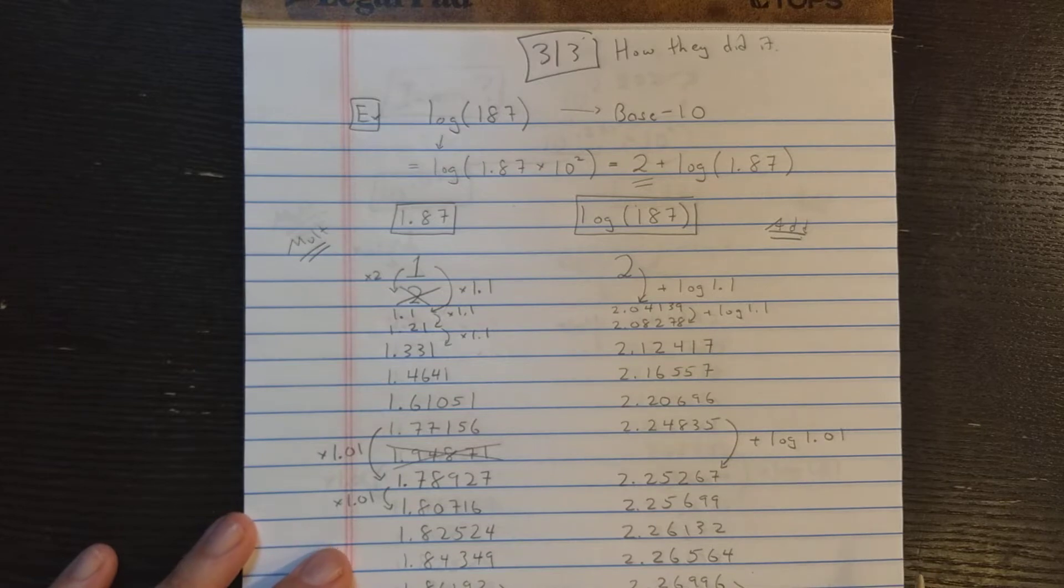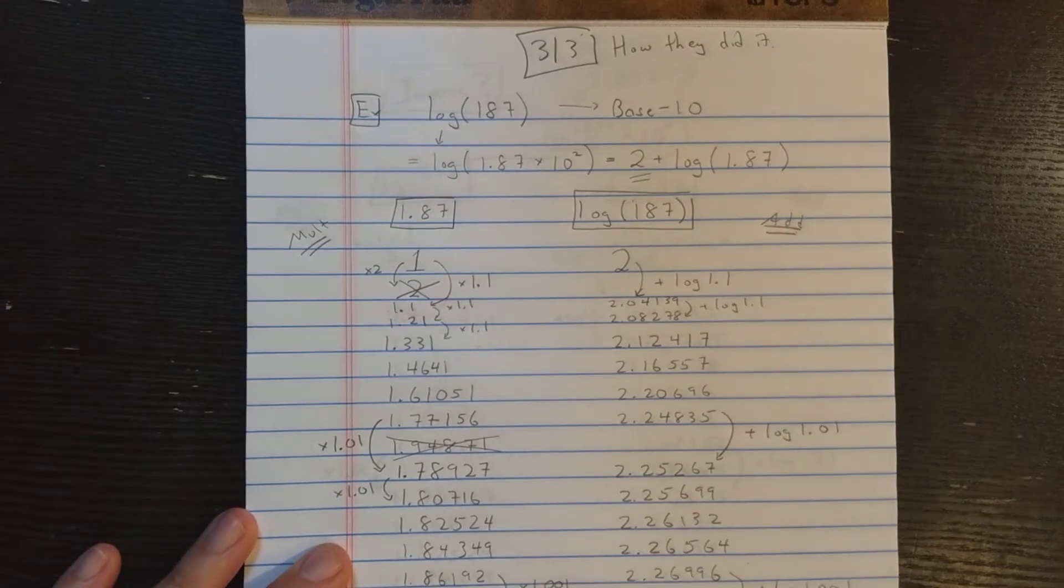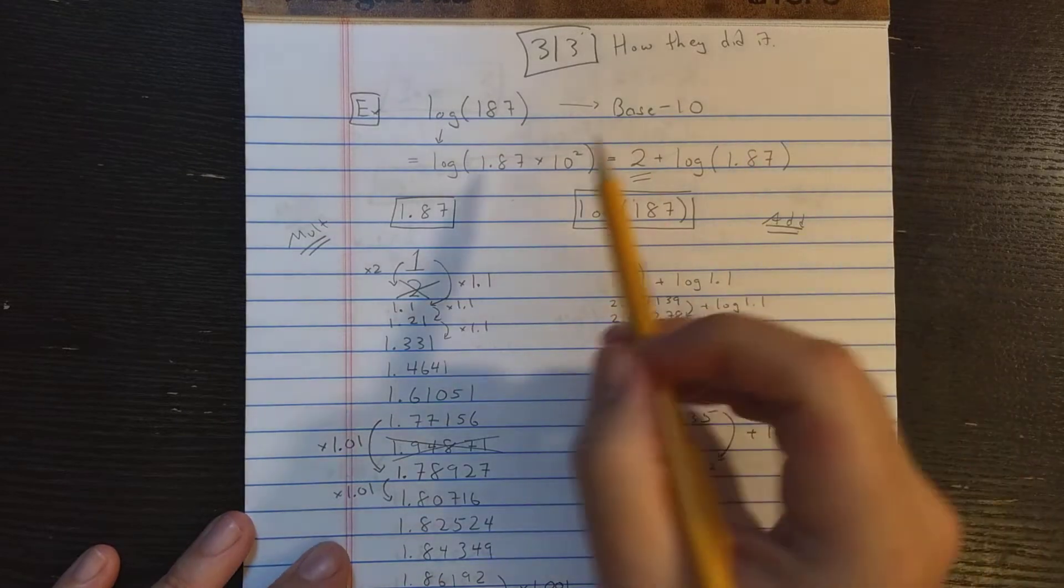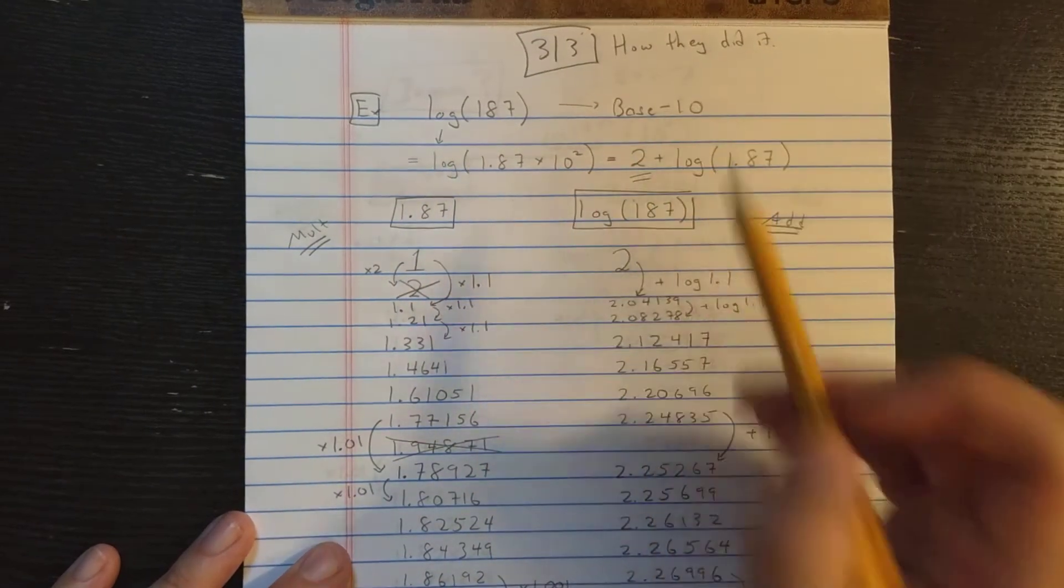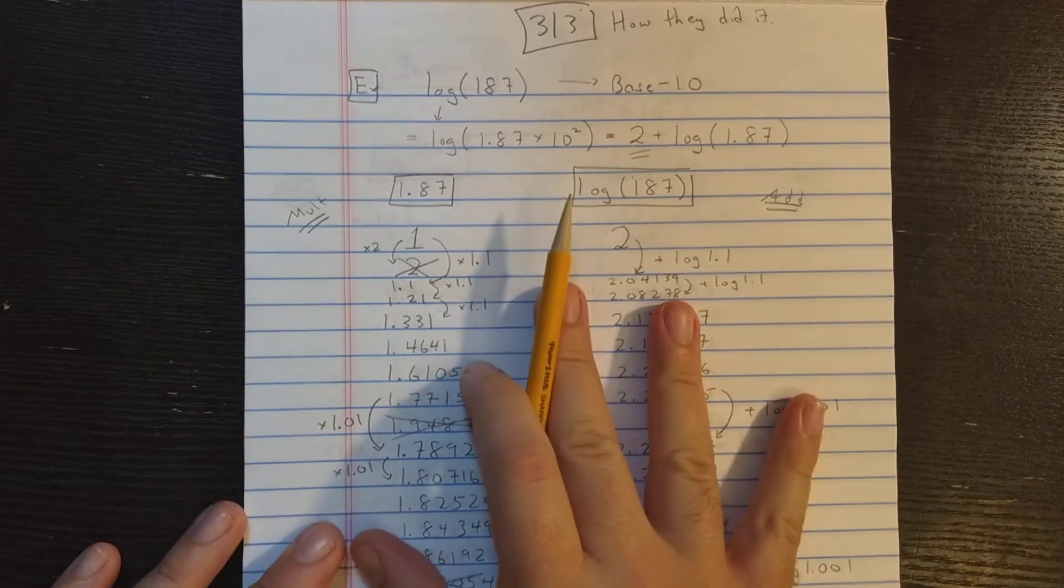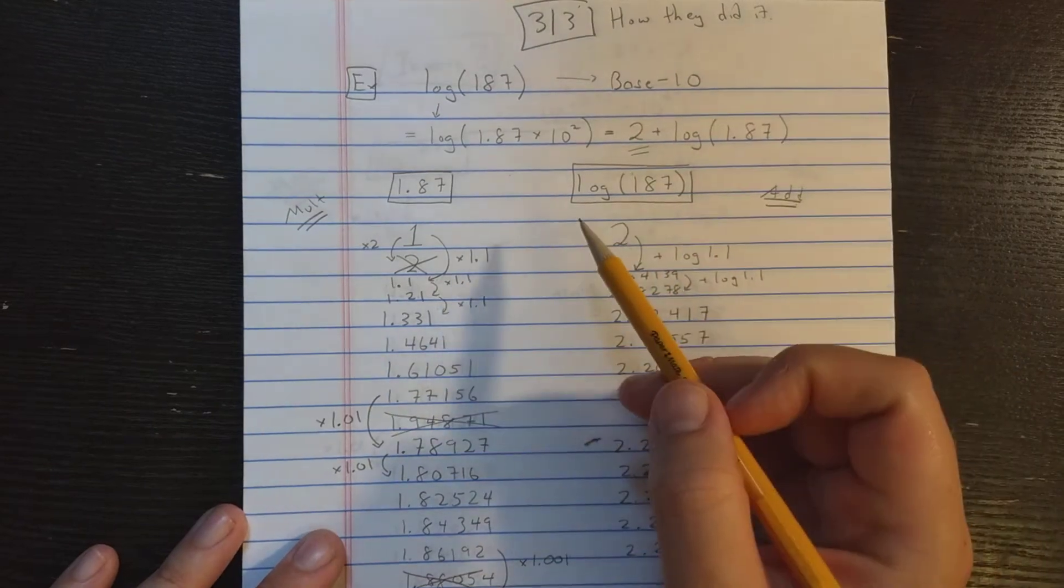Here, with this example, we'll really show why the algorithm is well suited to those calculators. So I'm going to compute log of 187 in base 10, and I'm going to show the registers that the calculator is going to have as we go here.